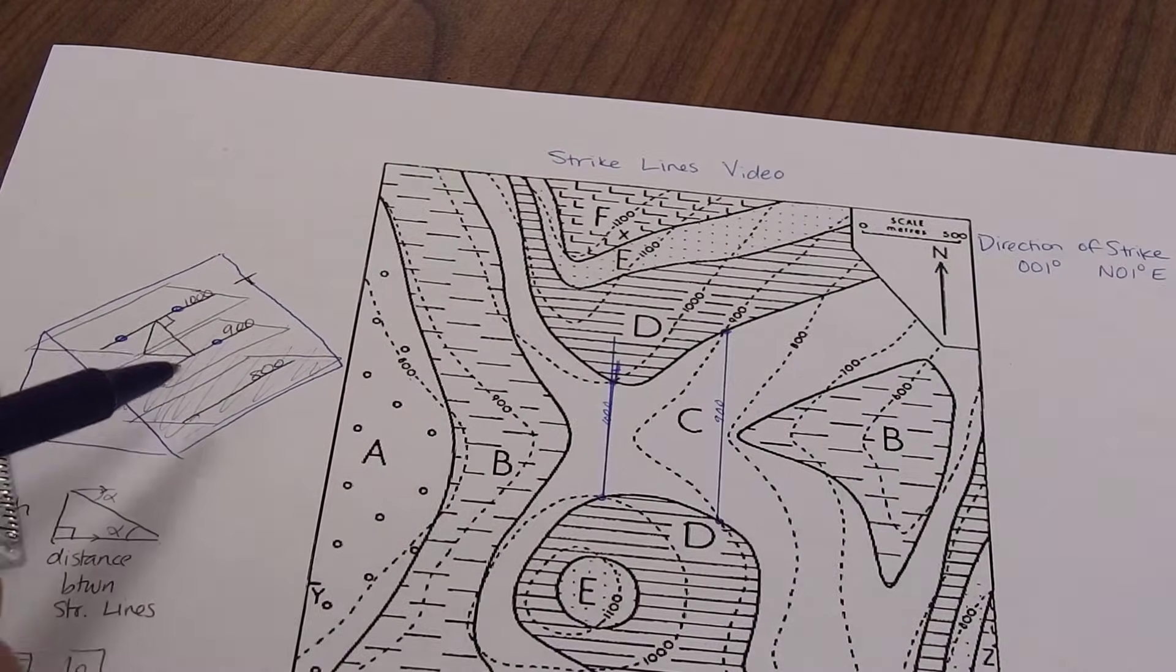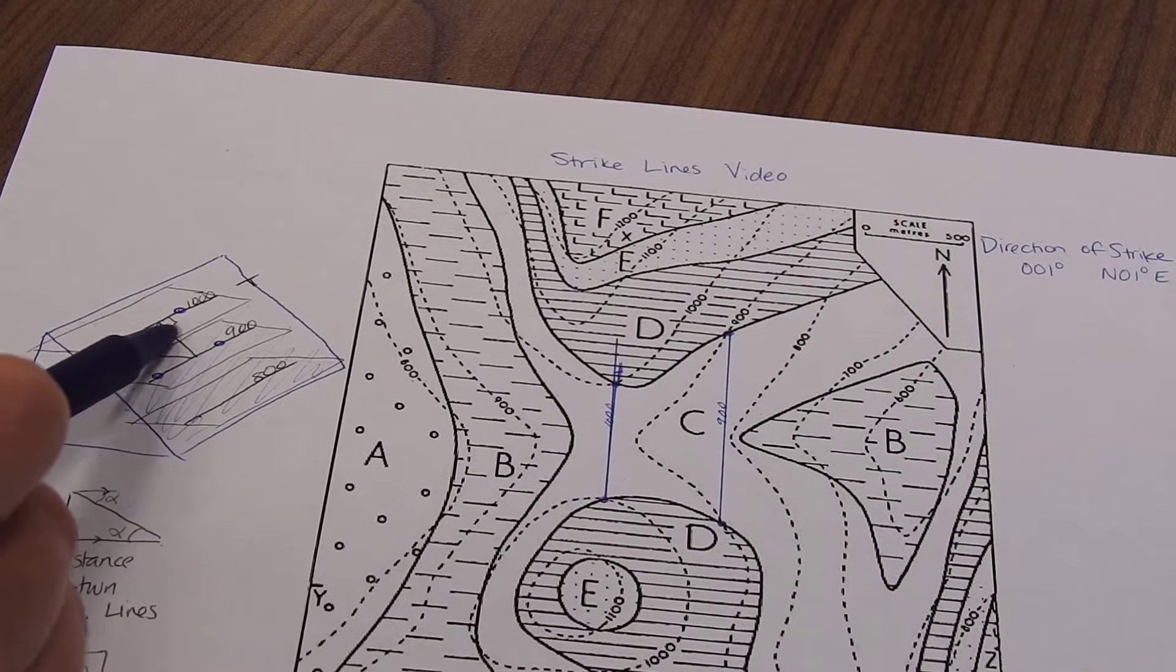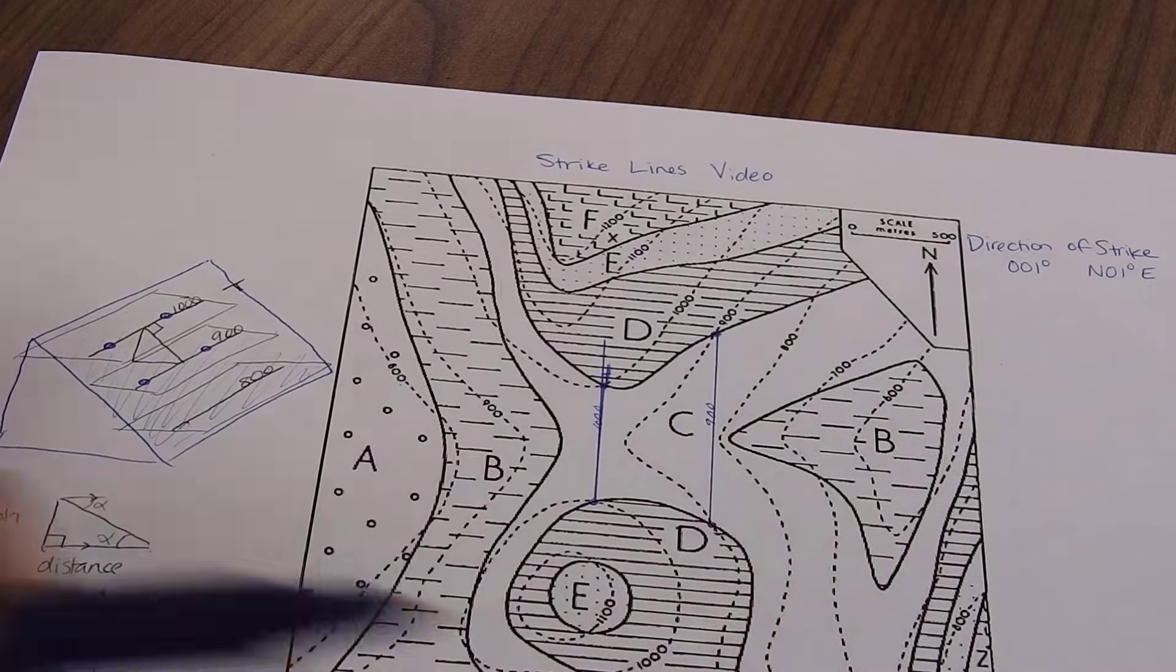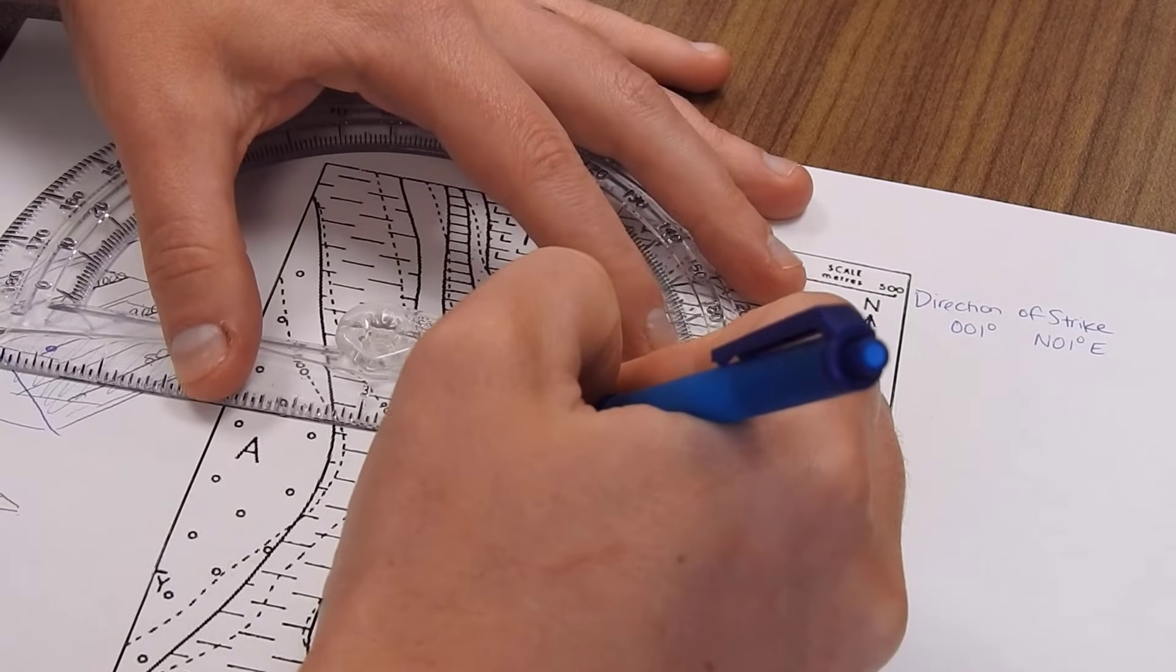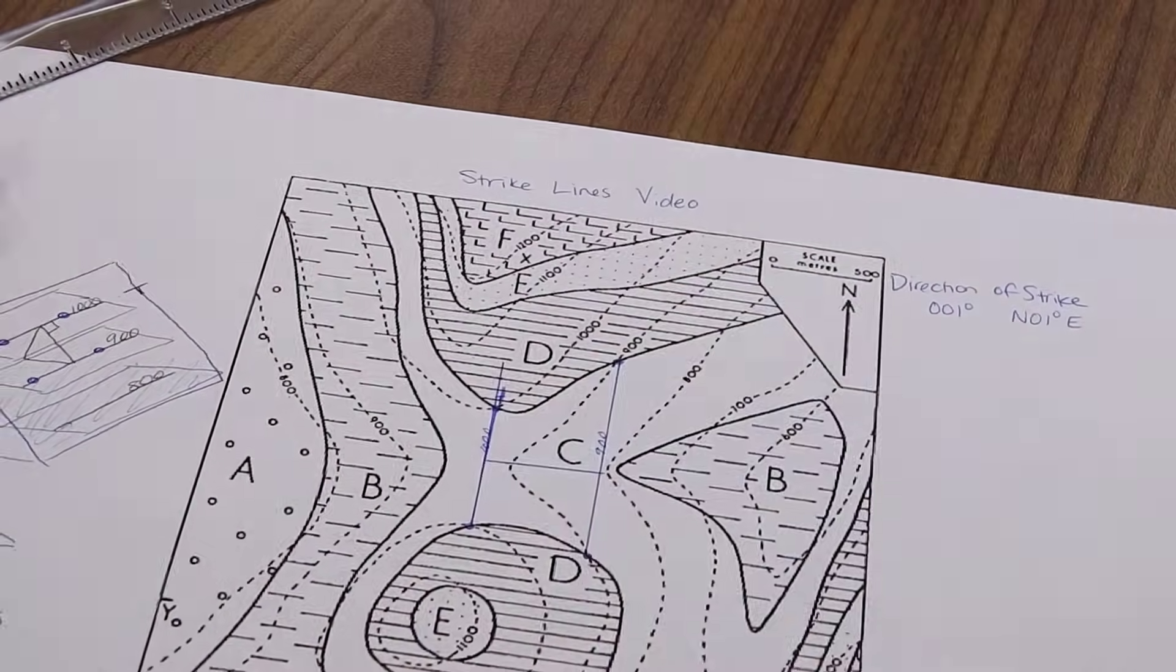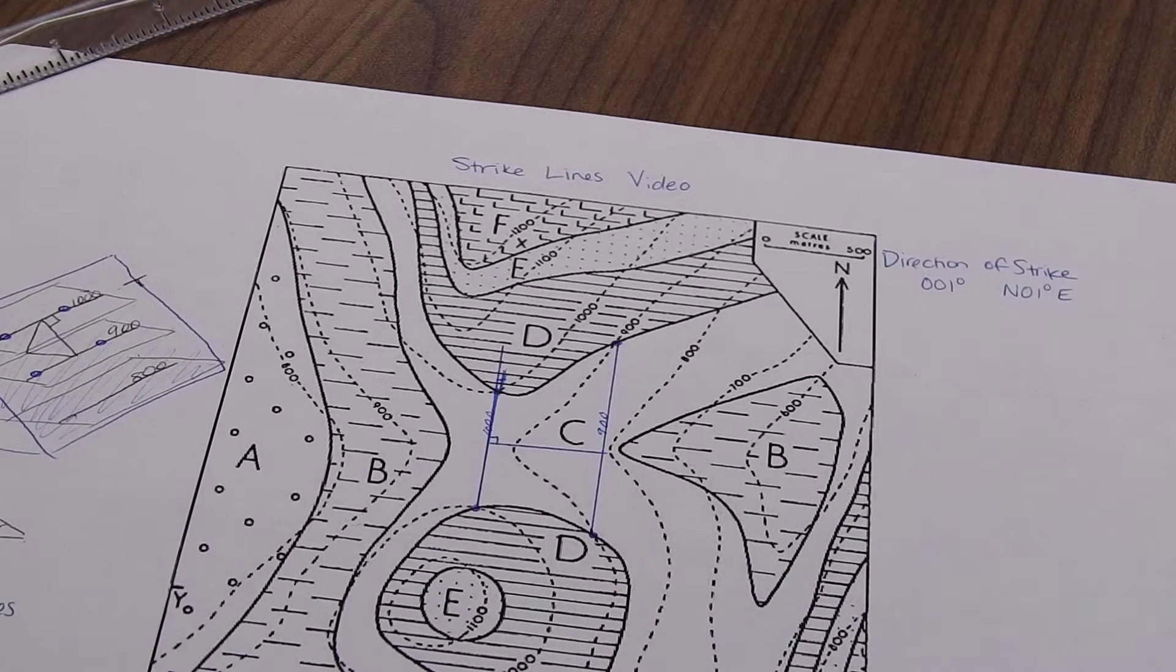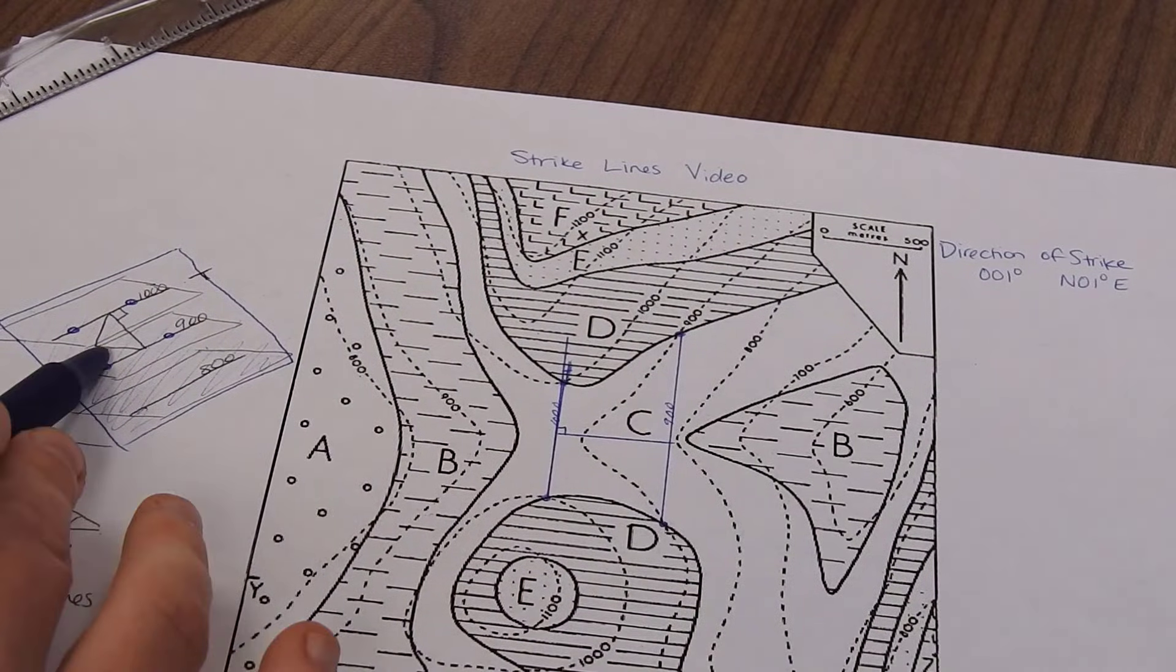So the next thing we had done over here was we drew in a line that was perpendicular to strike that connected these two strike lines. So let's do that. This line is perpendicular. And then we're going to use this to make this little triangle right over here.